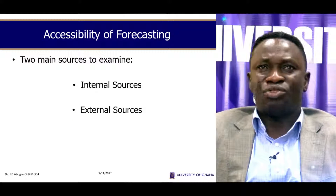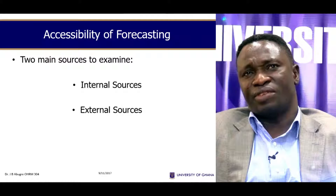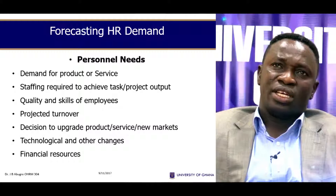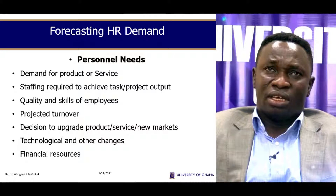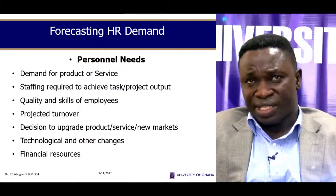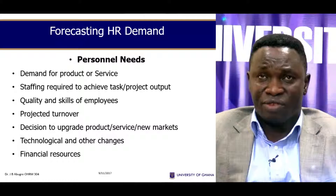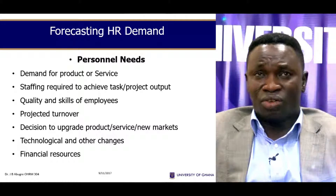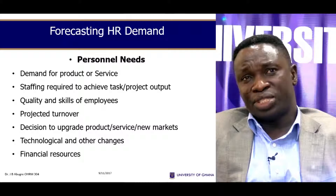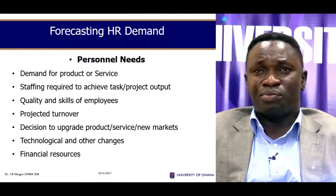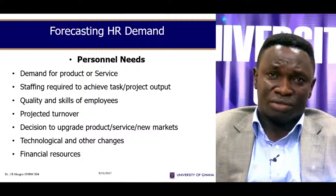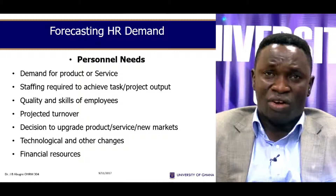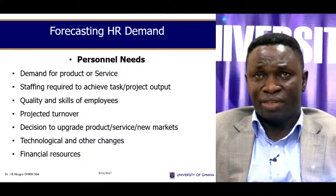There are two main sources to examine in terms of forecasting: internal sources and external sources. Forecasting HR demand relates to personnel needs — the demand for products or services. We need people when there is demand for products and services. This especially includes staffing required to achieve tasks, projects, and outputs; quality and skills of employees; projected turnover; decisions to upgrade products and services; new markets; technological and other changes; and financial resources. All these things are internal demand factors dealing with personnel needs.